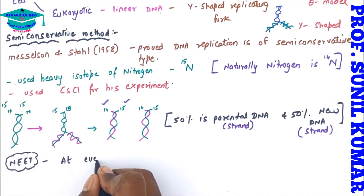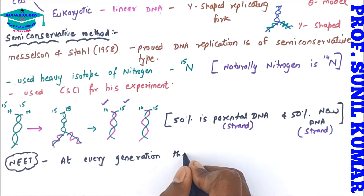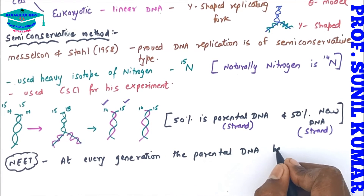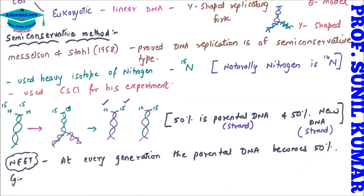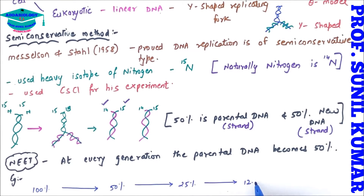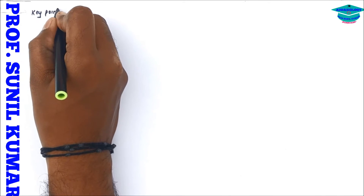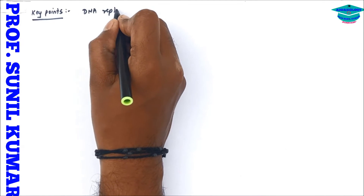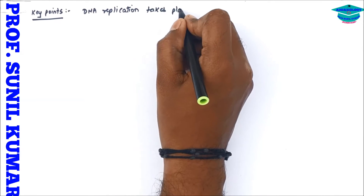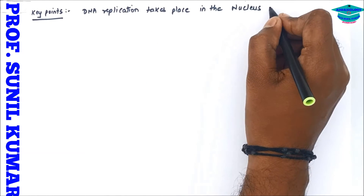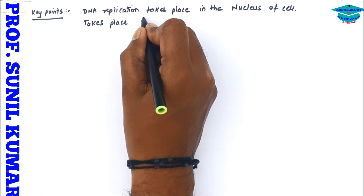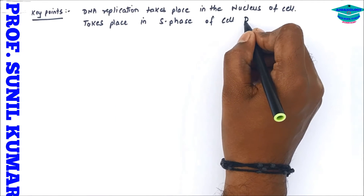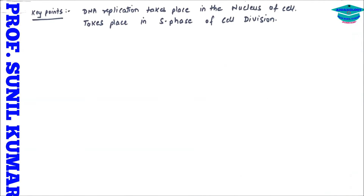At every generation the percentage of parental DNA becomes half. For example, if it is 100 percent at the start, in the next generation it will be 50, then 25, then 12.5, then 6.25, and so on. Two important key points: DNA replication takes place in the nucleus of the cell, and it takes place in the S phase (synthetic phase) of cell division.